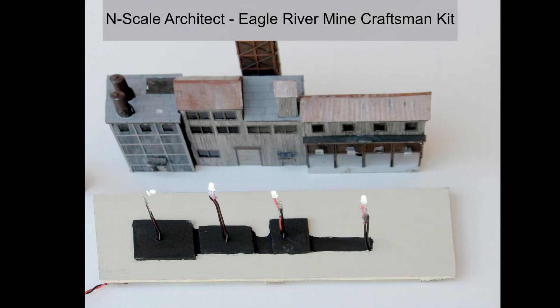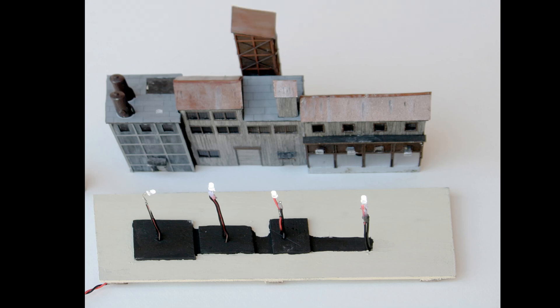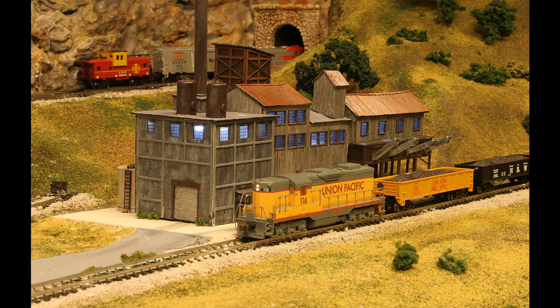I put together the Eagle River Mine Kit a few years ago. As you can see it's lighted with four stalks that sits on a foam board base. Here it is sitting on a former layout of mine.